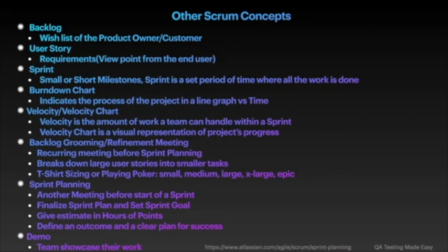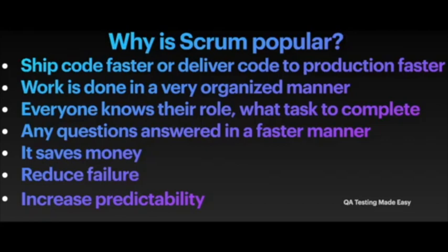The actual work is then done. The team works on their assigned tickets. At the end of the sprint, the team meets again to showcase their work — also known as a demo — where team members present their work and anyone can ask questions. Then comes the retro meeting, which I already covered. That's the whole Scrum flow. Why is Scrum so popular? Teams can ship faster, work is done in an organized manner, everyone knows their role, questions are answered faster, it saves money, reduces failure, and increases predictability.